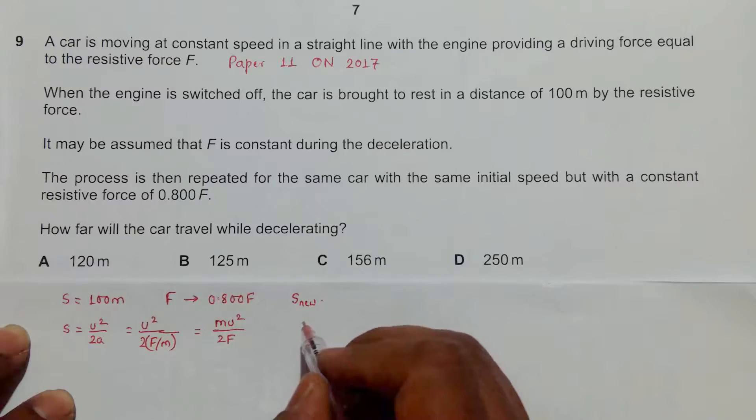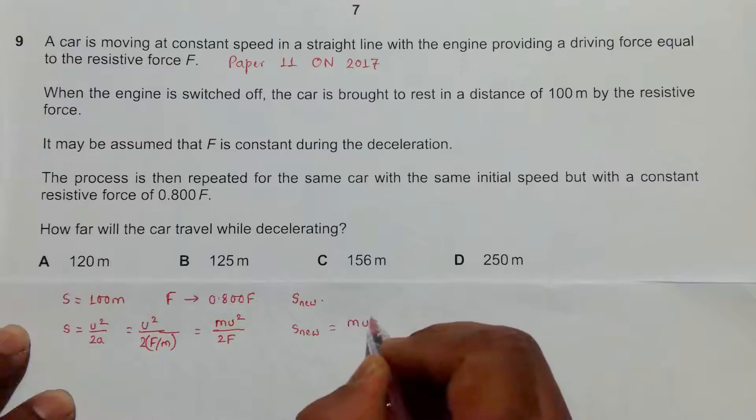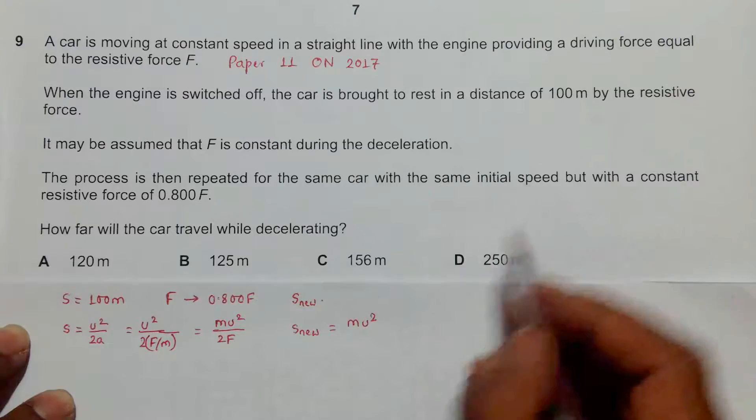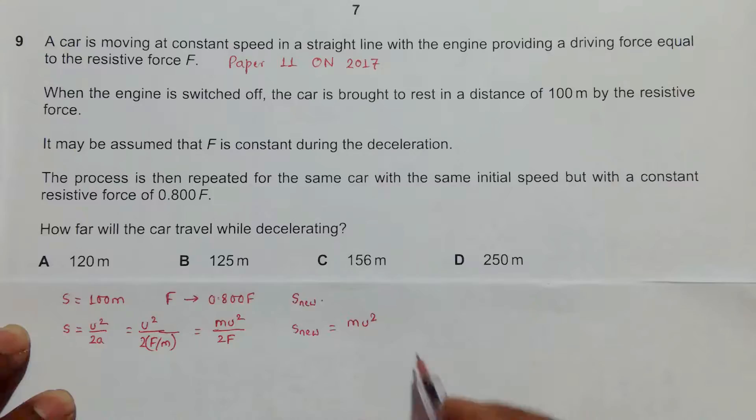Now after we change the force, we have s_new is equal to m u squared. Since it says the same initial speed, u should be the same, and now it is divided by 2 into F_new.